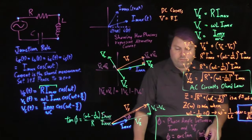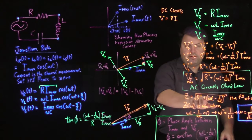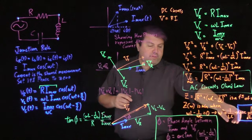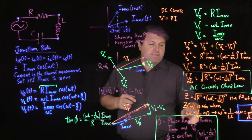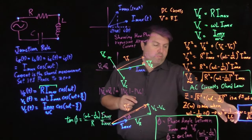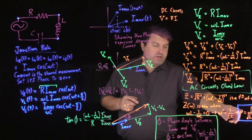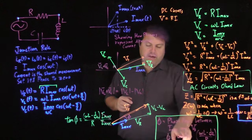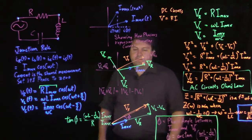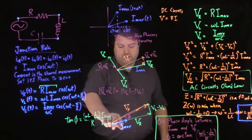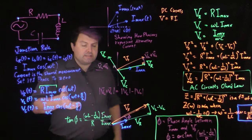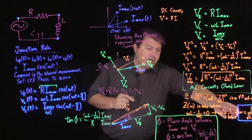Funny enough, we have seen this omega L minus 1 over omega C right here, when talking about this impedance, that when the impedance is at a minimum, omega is 1 over the square root of LC. If we plug this in, this will become zero itself, and then the angle will be zero. So our voltage of our source and our current will have the lowest impedance and be in phase when omega is tuned with the induction and capacitance of this circuit.